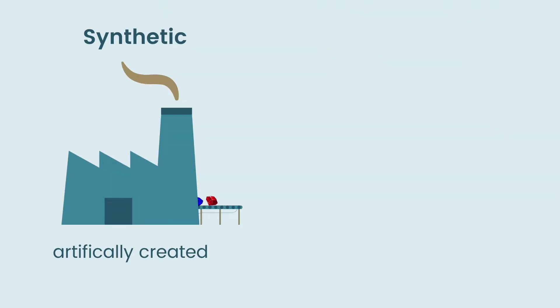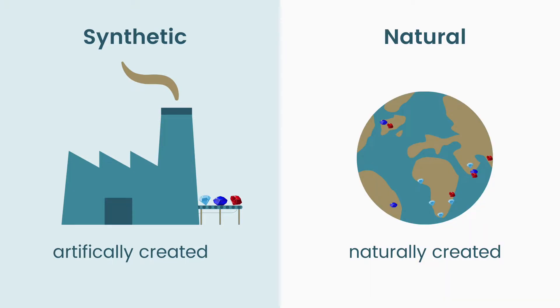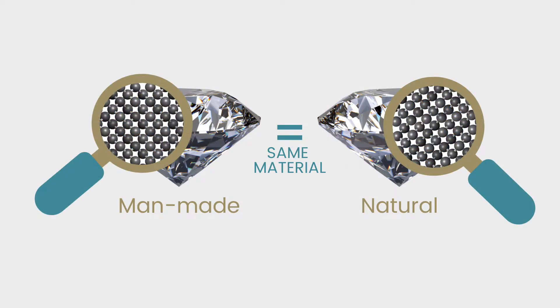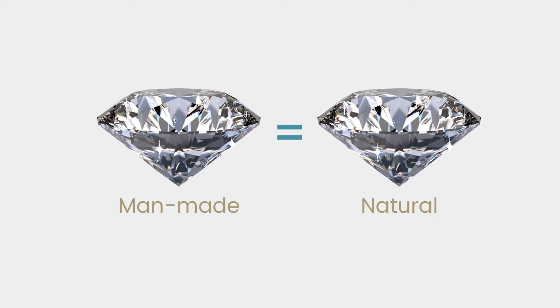Synthetic gem materials are artificial products that have an exact counterpart in nature. In other words it is a man-made version of a natural gem. It shares the same chemical makeup and crystal structure as the natural version and therefore has the same properties.